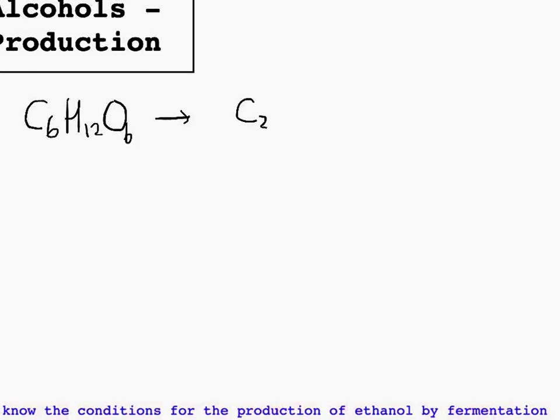Fermentation is a process by which yeast anaerobically respires, converting glucose, which is C6H12O6, into ethanol, which is C2H5OH, and carbon dioxide. To balance that equation, you need two carbon dioxide and two ethanol.